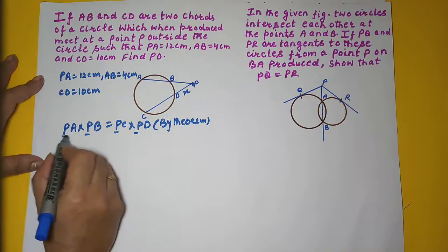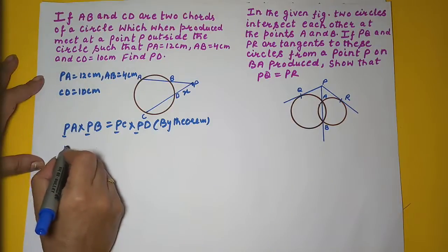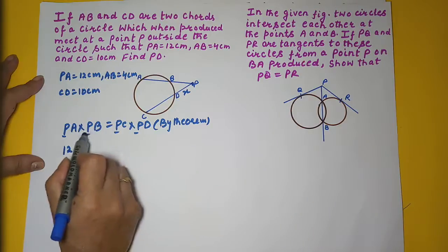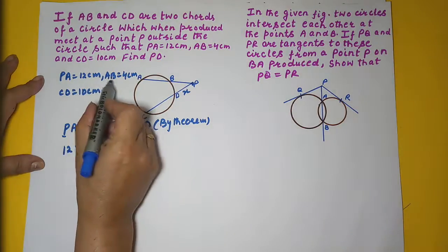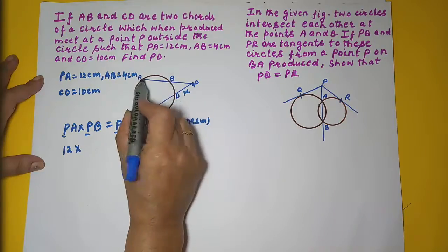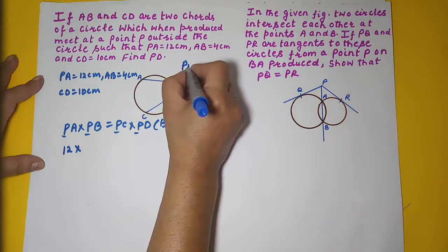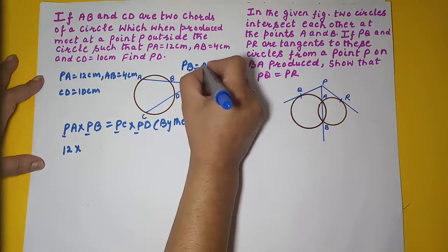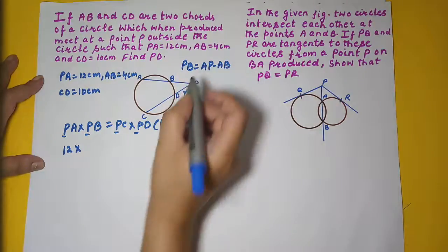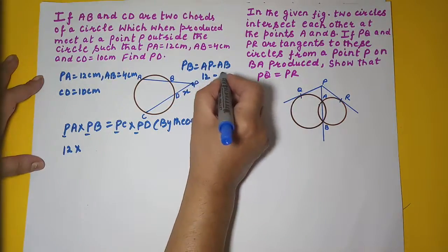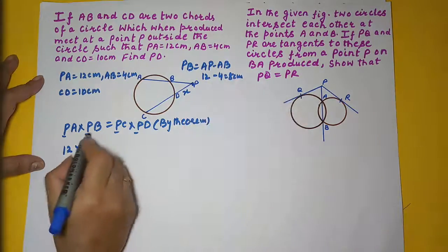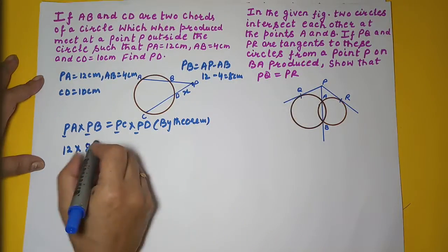We have PA as 12 cm. We don't have PB directly, but we have AB. We can calculate PB as AP minus AB. AP is 12 and AB is 4, which gives PB = 8 cm.